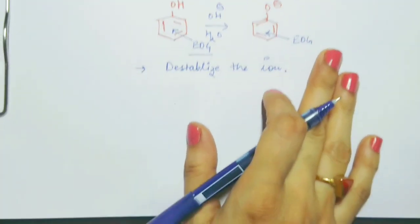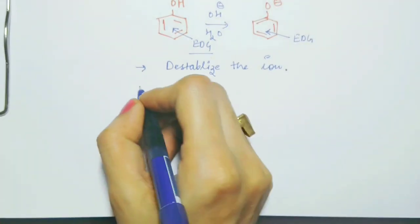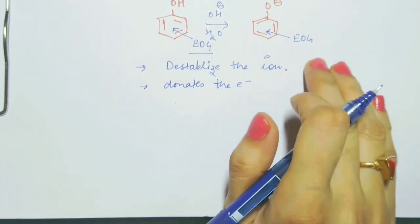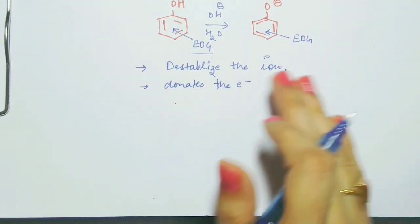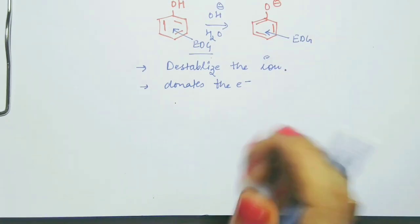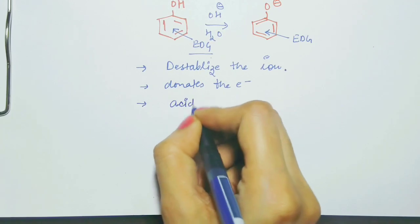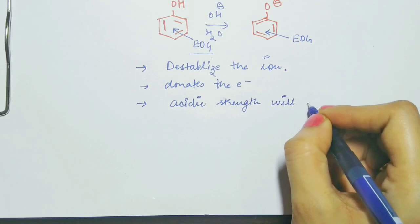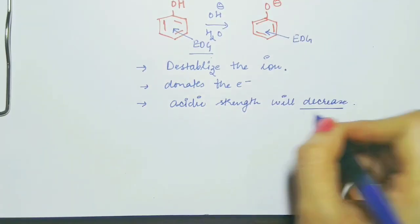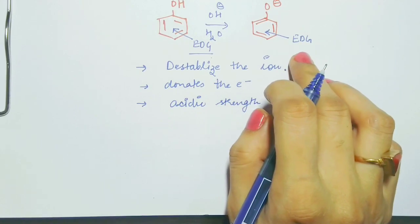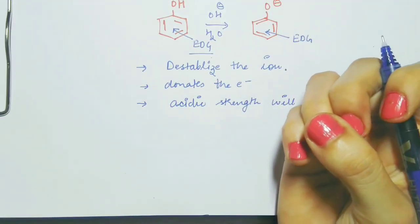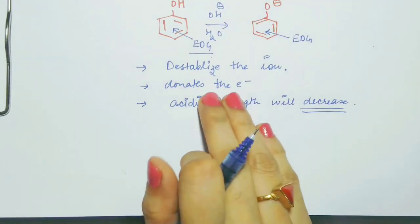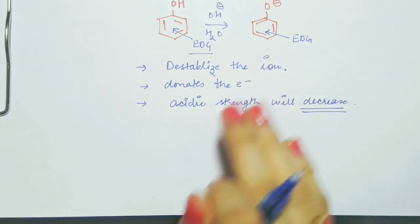This is because it affects the intensity of the negative charge on the phenoxide ion. The electron donation affects the negative charge, which destabilizes the ion. Due to this destabilization, the acidic strength will decrease.